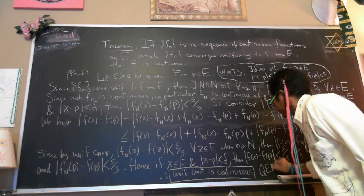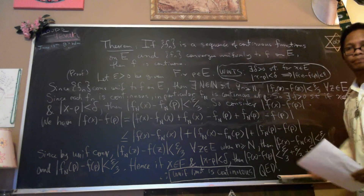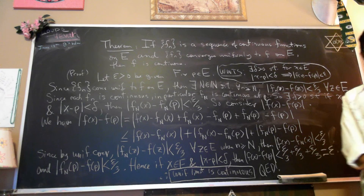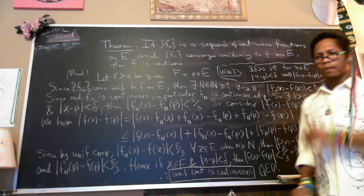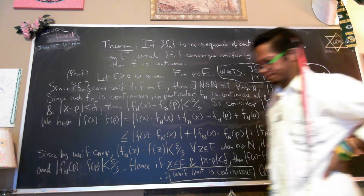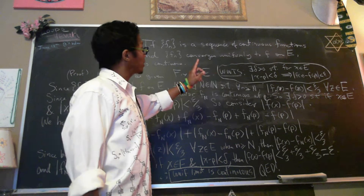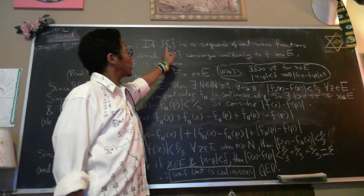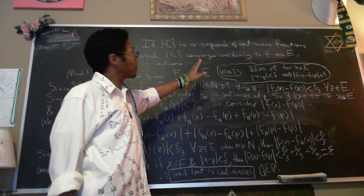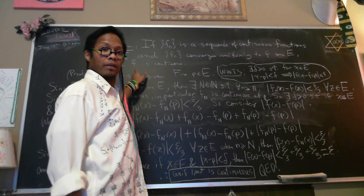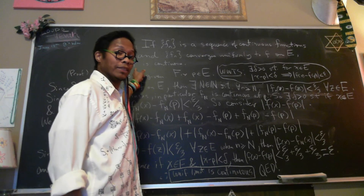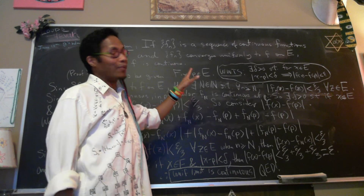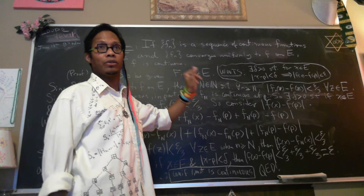Therefore, the uniform limit is continuous. QED. That's a great proof. And I'm going to ask you — perhaps for fun or for the final exam, definitely — to show that we can replace the word 'continuous' with 'uniformly continuous.' That is, if I have a sequence of uniformly continuous functions that converge uniformly, prove that the uniform limit is also uniformly continuous. A uniformly convergent sequence of uniformly continuous functions is uniformly continuous.